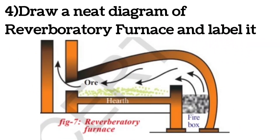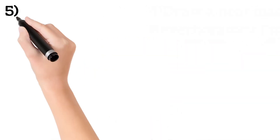Fourth question: draw a neat diagram of a reverberatory furnace and label it. A furnace is used to carry out pyrochemical processing in metallurgy. It has three parts: hearth, chimney, and firebox. The hearth is where the ore is kept for heating. The chimney is the outlet from which waste gases go out. The firebox is where fuel is kept for burning. In a reverberatory furnace, the firebox and hearth are separate, but vapors and flames from the burning fuel touch the ore in the hearth and heat it.